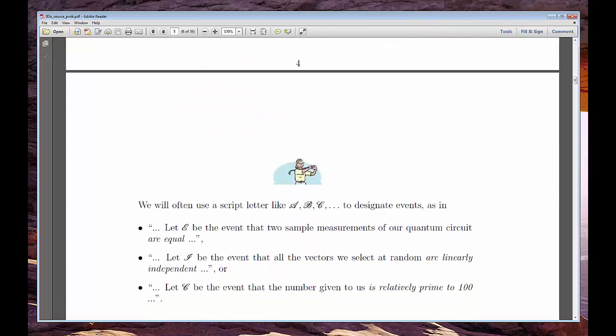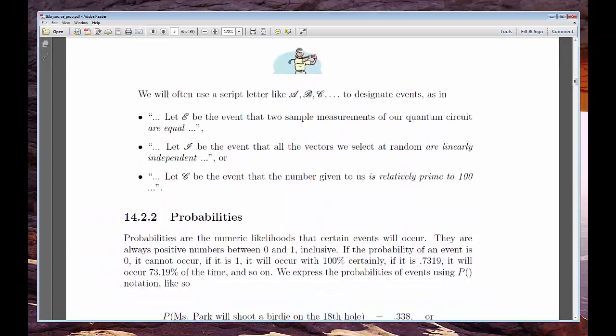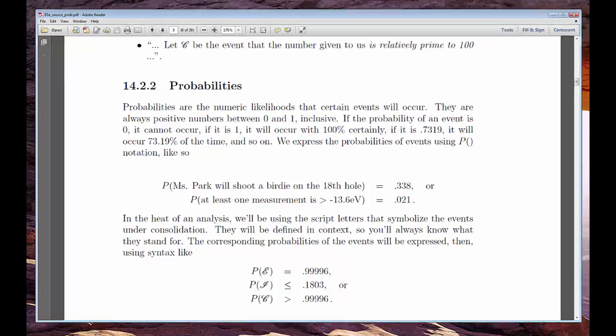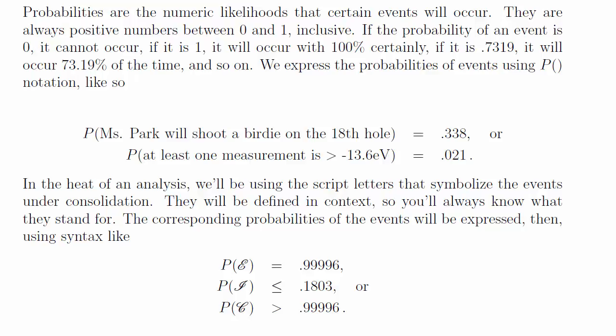Events can be described in natural language. The event that Ms. Park will shoot 1 under par at Pebble Beach tomorrow. Probabilities help us understand how likely the events are. The probability that Ms. Park will shoot 1 under par tomorrow is .3 or 30 percent.